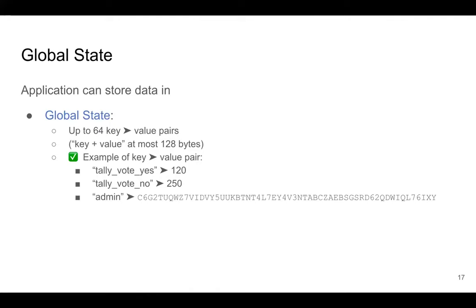Now that you know what the state of the blockchain is, let's see how smart contracts work with it. One of the first things I told you is that a smart contract can read and write data on the blockchain — and they store it in the state of the blockchain. On Algorand, we use the name 'application' for smart contract. Each application has access to what's called a global state, which is a database of up to 64 key-value pairs where each key and value is at most 128 bytes.